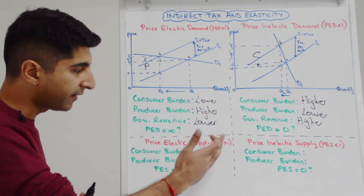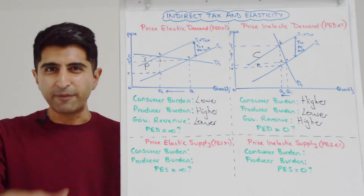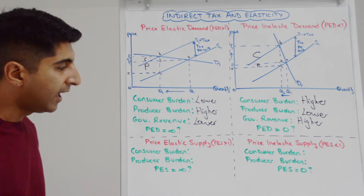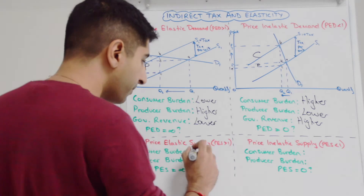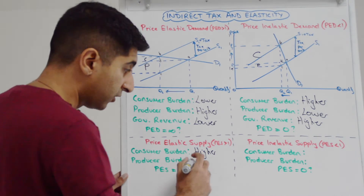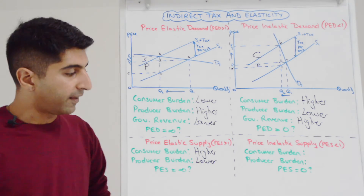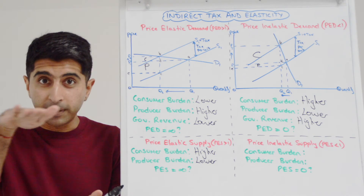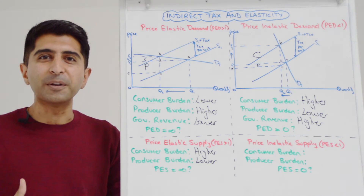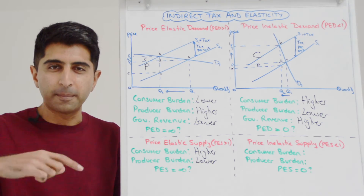What about price elasticity of supply? This is a good exercise for you. For price elastic supply, draw a normal demand curve with a quite shallow supply curve, then shift it upwards and apply the same process. You'll find the consumer burden is higher — a lot of the tax is transferred to consumers via higher prices — and the producer burden is lower. If supply is perfectly price elastic with a completely horizontal supply curve, shifting it upwards means the change in price exactly equals the indirect tax: consumers bear everything and producers bear nothing.